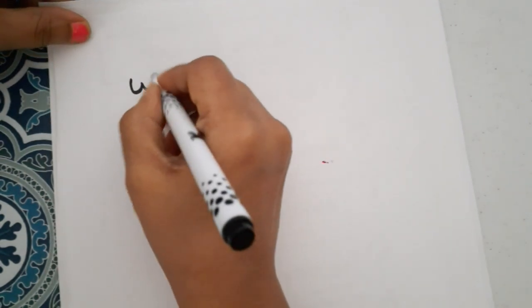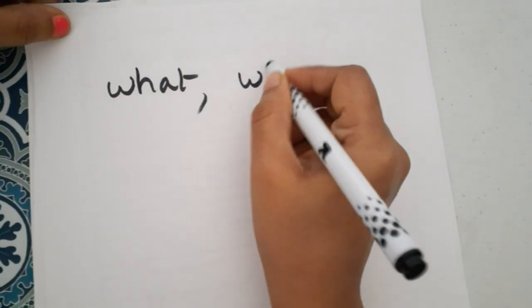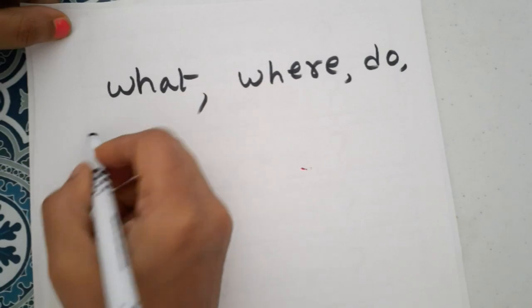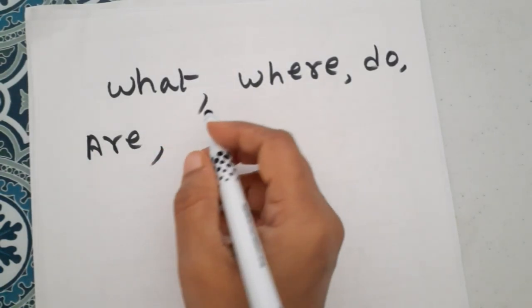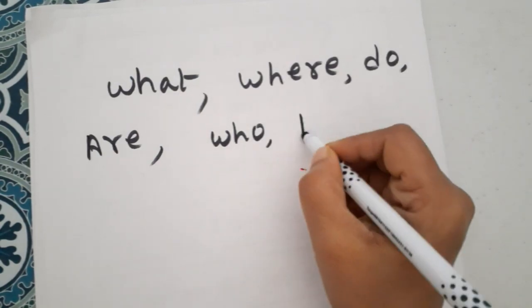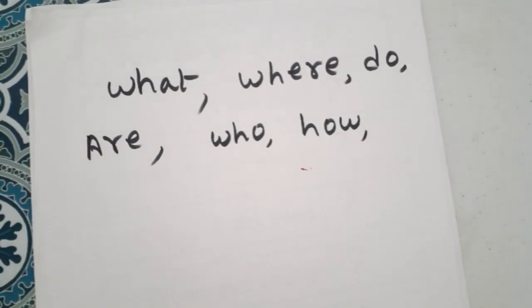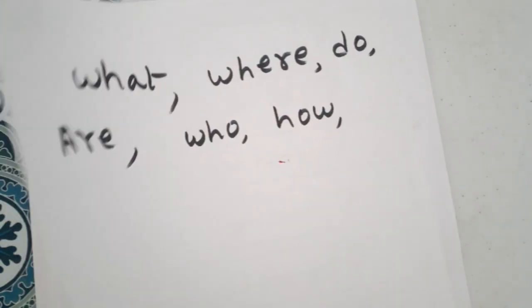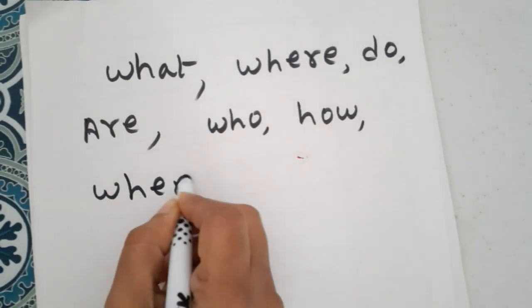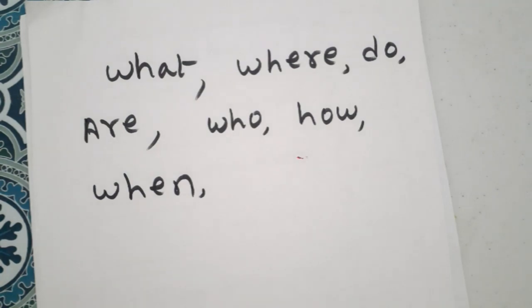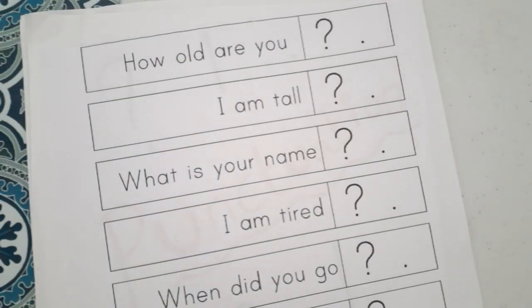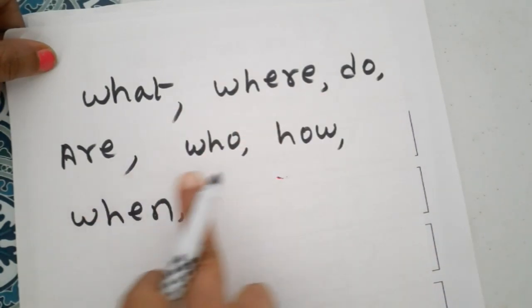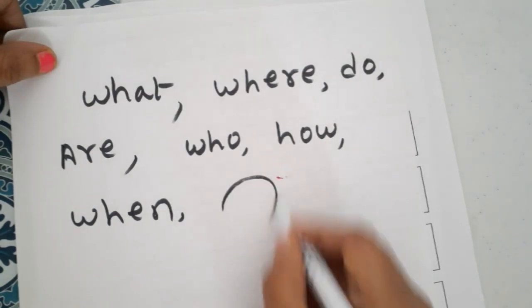For example: What? Where? Do, Are - Are you happy? Who? How are you? When are you coming? Where are you? So we learn question words like what, where, do, are, who, how, and when. Just keep one big question mark for questions.